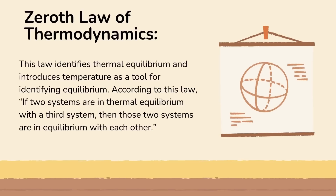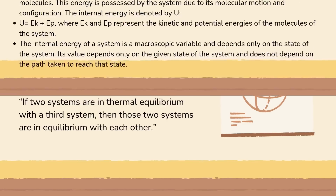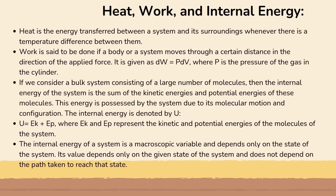Next is the Zeroth Law of Thermodynamics. This law identifies thermal equilibrium and introduces temperature as a tool for identifying equilibrium. According to this law, if two systems are in thermal equilibrium with a third system, then those two systems are in equilibrium with each other.